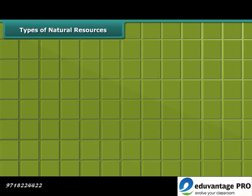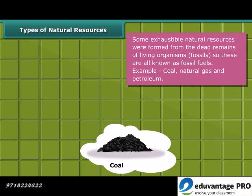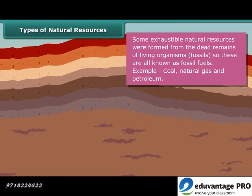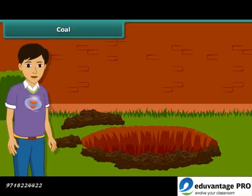Some exhaustible resources like coal, natural gas and petroleum were formed from the dead remains of living organisms called fossils, and hence these are also known as fossil fuels. Now let us know about these fossil fuels in detail. Let us start with coal.